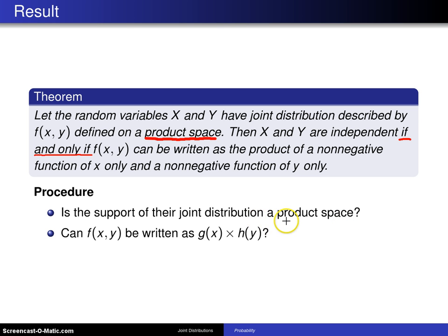But if the joint distribution has support which is a product space, then you go on to the next question.